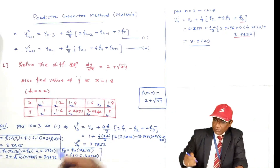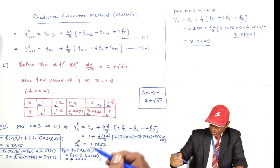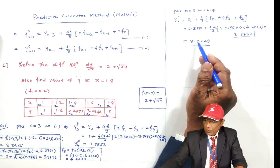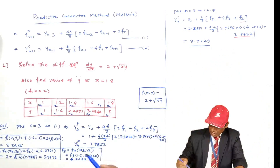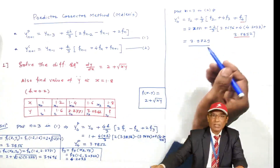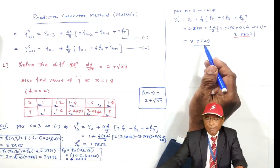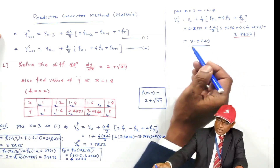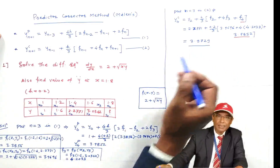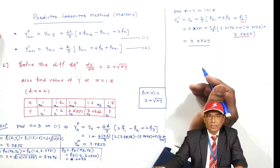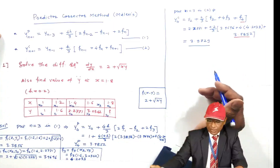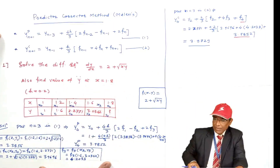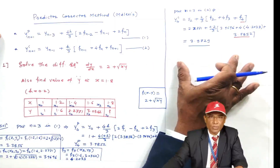Normally, if the predicted value and the corrected value are close to each other — here 3.9729 and 3.985, with no significant difference — we can stop. If you want to improve it further, you can iterate. But in the examination, just find the predicted value and the corrected value. That's all.